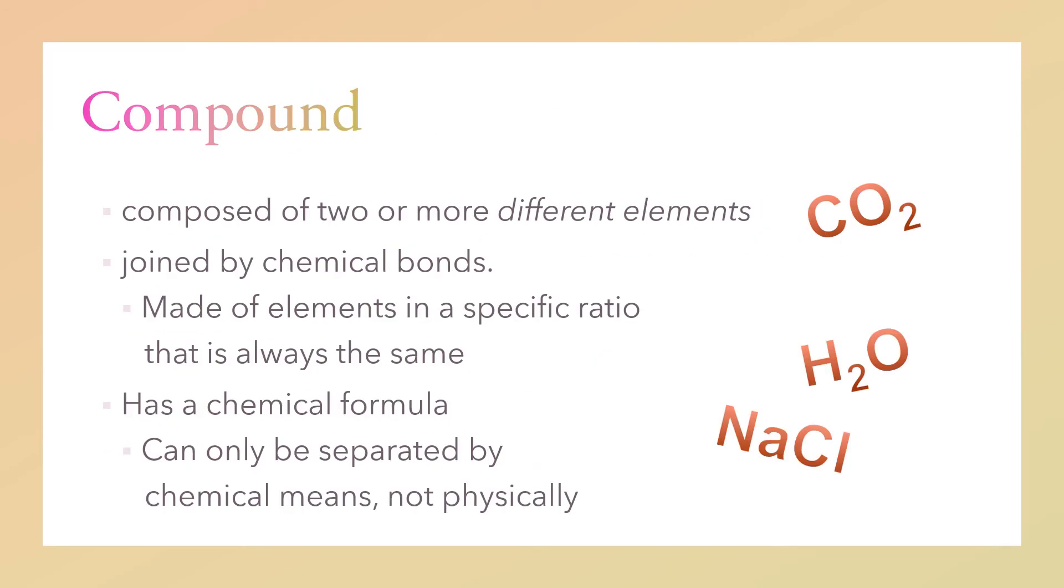If we combine those two elements, it is called a compound. What is a compound? Compound is composed of two or more different elements joined by chemical bonds. This compound is made up of a specific ratio, meaning the number of elements combined with each other. Specific ratio that is always the same, and it has also a chemical formula.